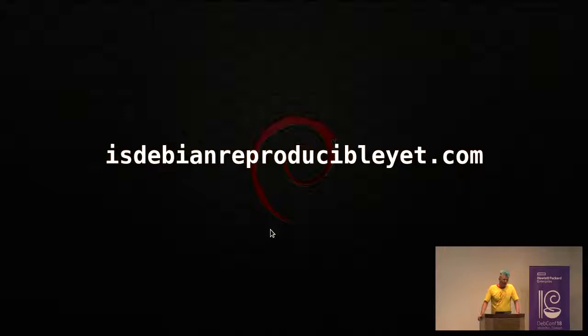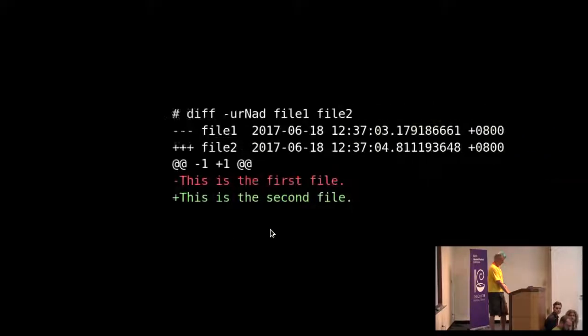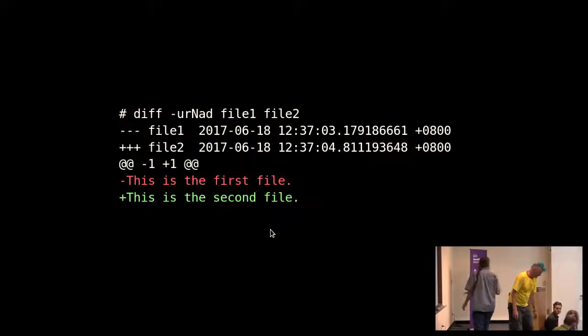And we have this web page, is Debian reproducible yet? Which always says no. Or not always, in a few years it'll hopefully say yes. If you want to find out about your packages, you can go to tests.reproducible-builds.org or you can still go to reproducible.debian.net slash source package name and there you can see whether your package is reproducible or not.